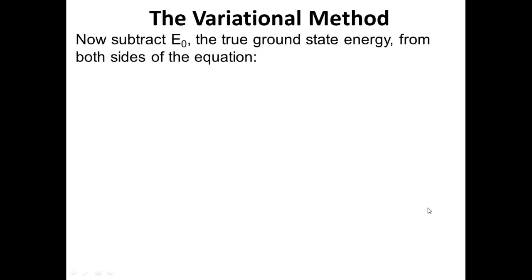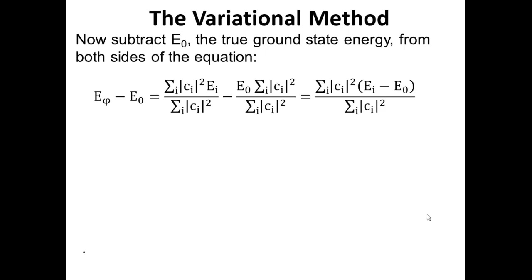Now we subtract E_zero — the true ground state energy — from both sides of the equation. We're just doing algebra here: we don't know what E_zero is, we're just setting up an expression we can work with. E_zero is simply being represented by the same fraction we saw before, multiplied by the same coefficients in numerator and denominator, and what that lets us do is group terms on the right-hand side: we have (E_i minus E_zero) multiplied by the square of the coefficients.